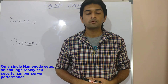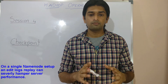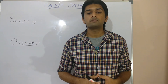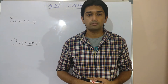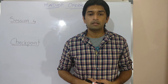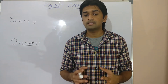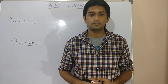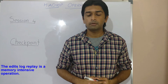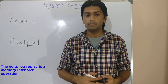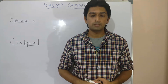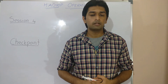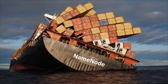On a single name node setup, an edits log replay can severely affect server performance. During an edits replay, the server has to first open the huge FS image file, load it into memory, replay the edits, and then save and close it as a newer version of the FS image onto the disk. This is an extremely memory-intensive operation, and on big clusters having GBs of namespace data, a checkpoint operation would almost surely eat up all available resources or even bring down the name node itself.